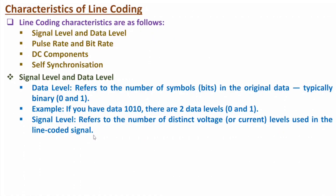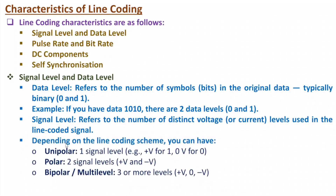In data level we talk about digital data — usually binary, giving two data levels. But signal level refers to the line coded signal. For example, in unipolar coding: logic 1 uses plus V, logic 0 uses zero voltage — so one signal level. In polar coding: plus V and minus V — two signal levels. In bipolar coding: plus V, zero, and minus V — three voltage levels. In multilevel coding we have more than three levels.